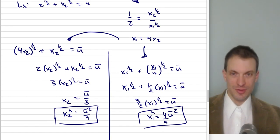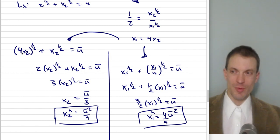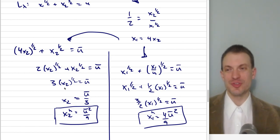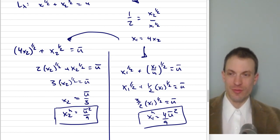Substituting x₁ = 4x₂ into the utility constraint, we get (4x₂)^(1/2) + x₂^(1/2) = u. Taking the square root of four out gives two times x₂^(1/2) plus one times x₂^(1/2), which is three times x₂^(1/2). Solving for x₂, this gives us the Hicksian demand for good two.